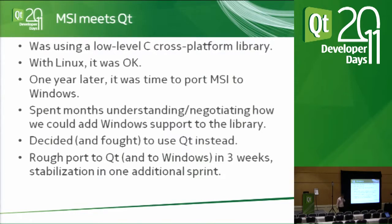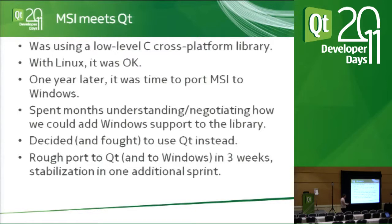As a first experiment, we did a rough port of our application to use Qt rather than the C platform library. We managed to do that in three weeks — remember, there were nearly 20,000 lines of C++ code at the time. In three weeks we got it working on Qt and, as a side effect, working on Windows. Then one additional sprint — in Agile a sprint is three weeks — we needed three more weeks to stabilize it. So three weeks to get it running, and three more to get it running without any major bugs.